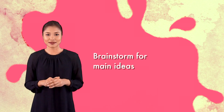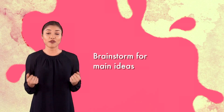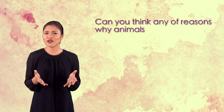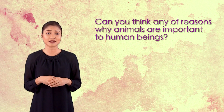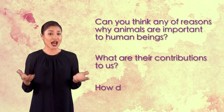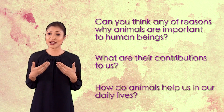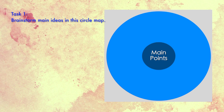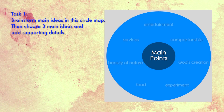Brainstorm for main ideas. Now let's brainstorm for main ideas. Can you think of any reason why animals are important to human beings? What are their contributions to us? How do animals help us in our daily lives? Brainstorm as many ideas as you can in this circle map, then choose the best three as your main ideas. Here is an example of my circle map, and these are the main points I have chosen.